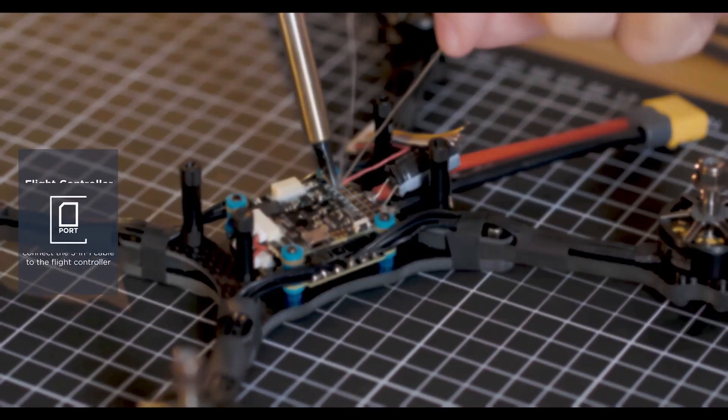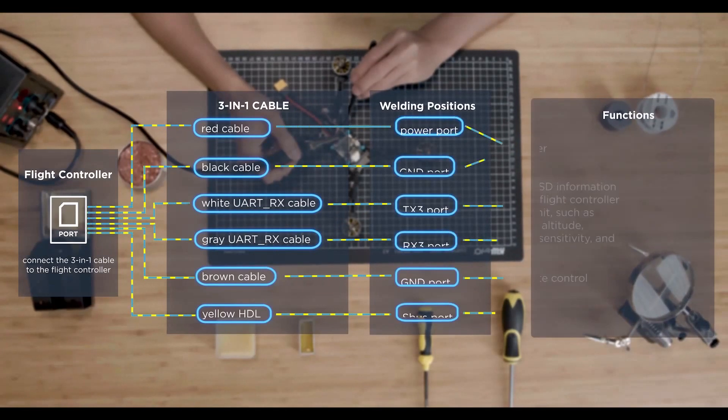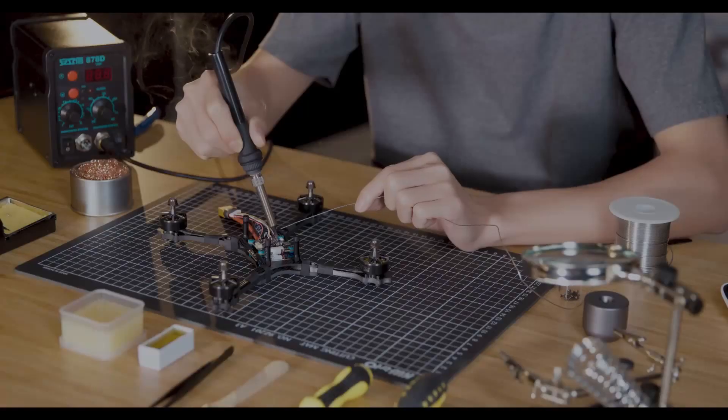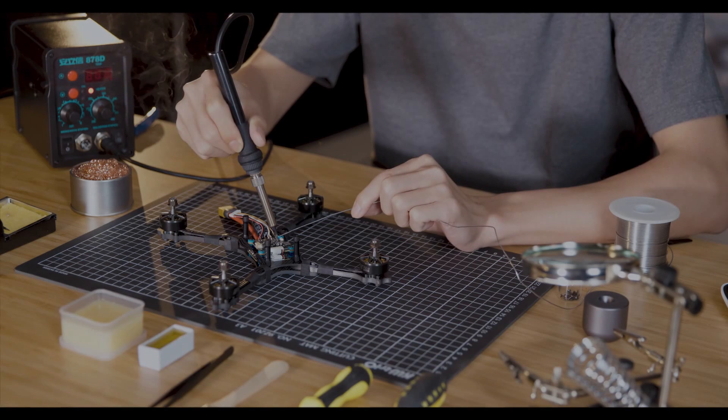Then, connect the red cable to the flight controller's power port and, according to the chart, connect other cables. After connecting these cables with the flight controller,